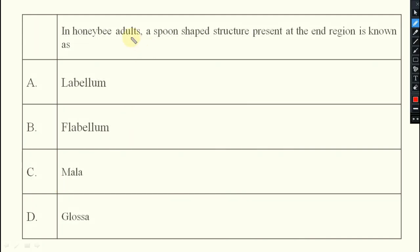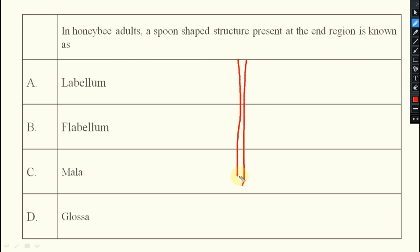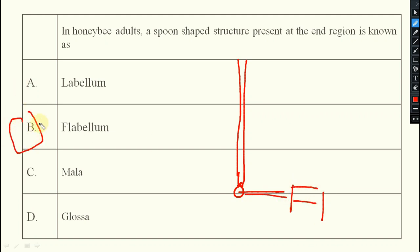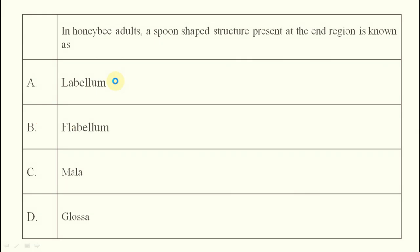Next: in adult honeybees, a spoon-shaped structure present at the end region of the glossa is known as what? The answer is flavellum. Option B is the right answer.